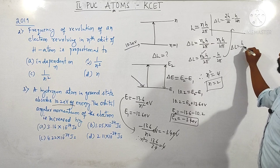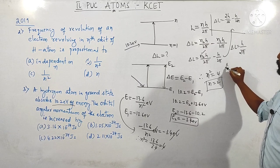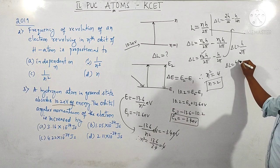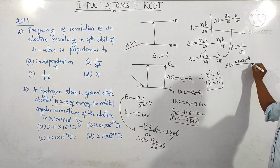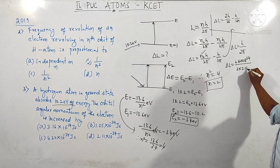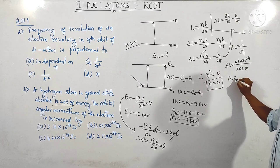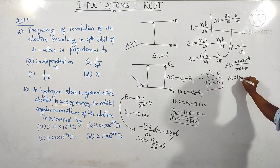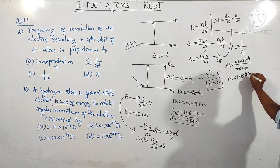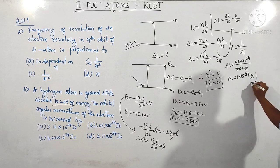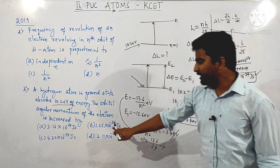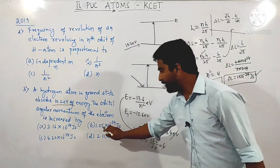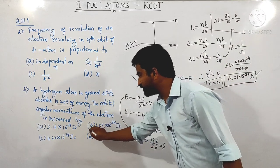ΔL = h/2π, where h = 6.62 × 10⁻³⁴. Dividing by 2π (≈ 2 × 3.142), ΔL ≈ 1 × 10⁻³⁴ J·s. More precisely, the answer is 1.05 × 10⁻³⁴ joules.